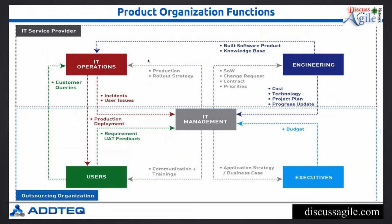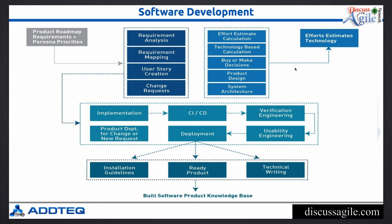In IT service organizations, instead of products you have users rather than customers and markets. There is an IT management team, and once they outsource the project to engineering, an IT operations team carries out the work. The similarity between product and IT organizations is that the engineering function is more or less the same.